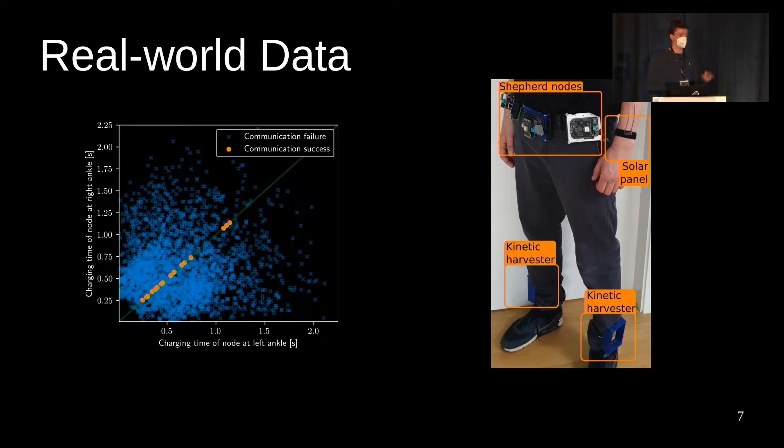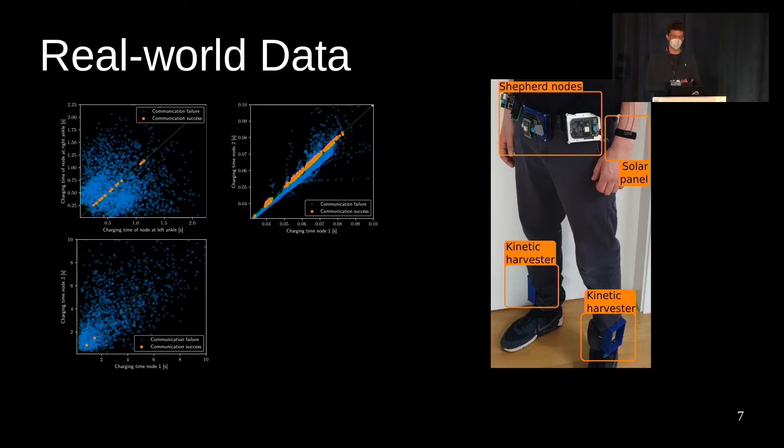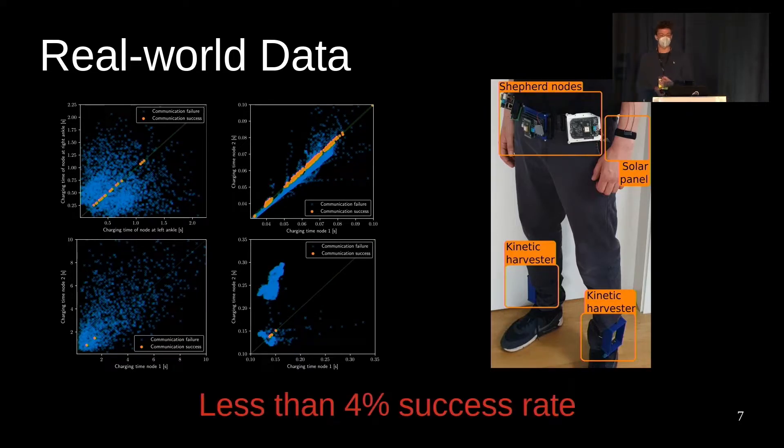Communication is only successful when a data point falls in that thin green region in the diagonal of this plot. We systematically analyzed the success rate for a variety of scenarios involving solar panels and kinetic harvesters. Overall, the condition is only fulfilled in less than 4% of the cases. That means that devices will very rarely communicate on two or more consecutive wake-ups.